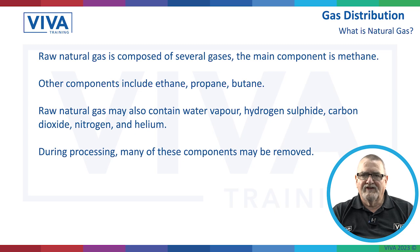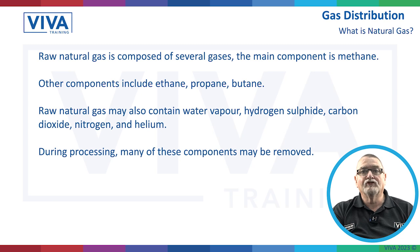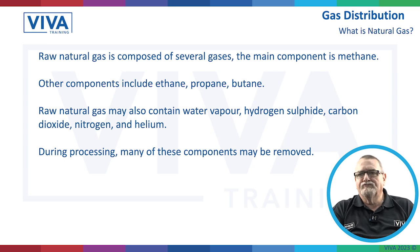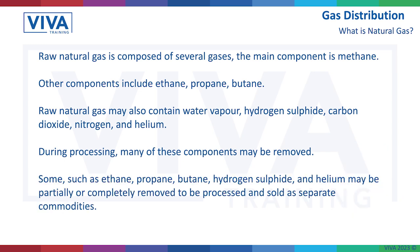During the process of extracting this natural gas and refining it for us to use, they take a lot of these components out. Things like ethane, propane and butane, hydrogen sulphide and helium — some of them are removed and can be sold separately. The propane and butane are taken off and sold as a separate entity.